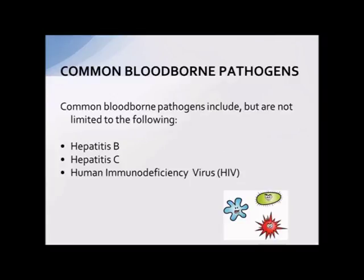There are many blood-borne organisms out there, and as we all know, there are many hepatitis strains out there, but the three that we are most concerned about in this presentation — for you to learn about every year in the school setting — are Hepatitis B, Hepatitis C, and HIV. Those are the three that we will be covering today in this presentation.